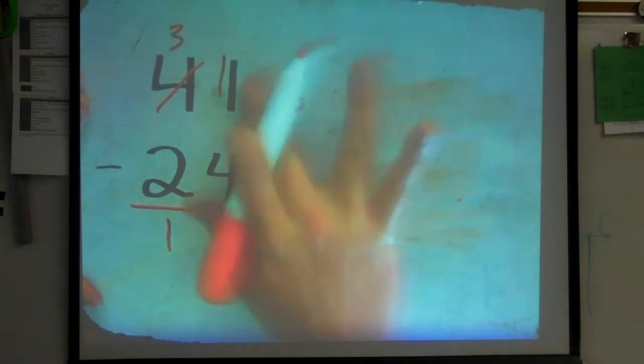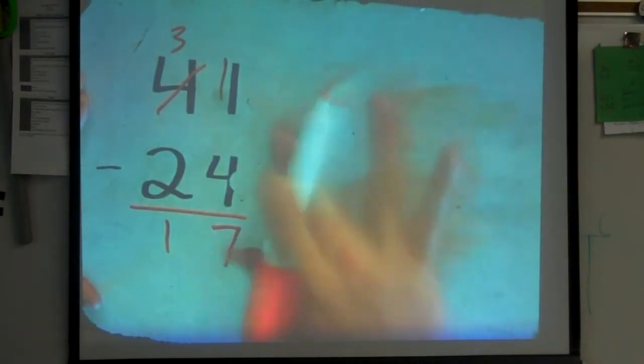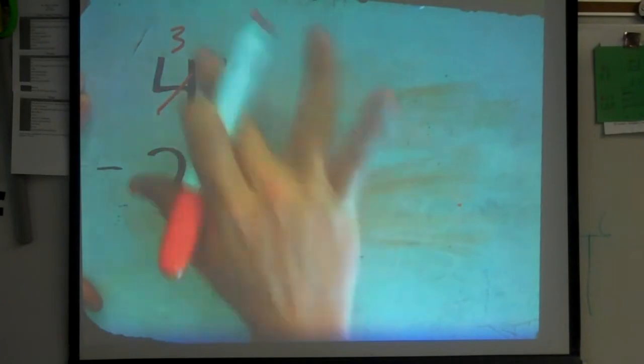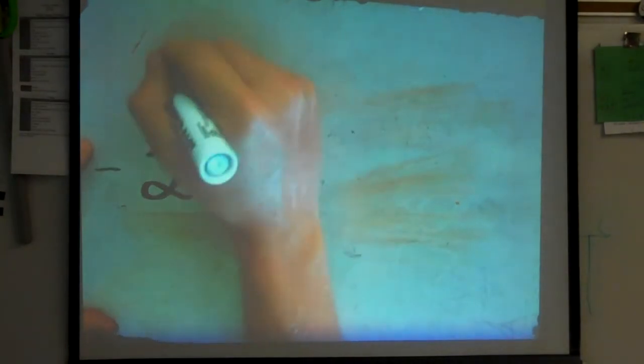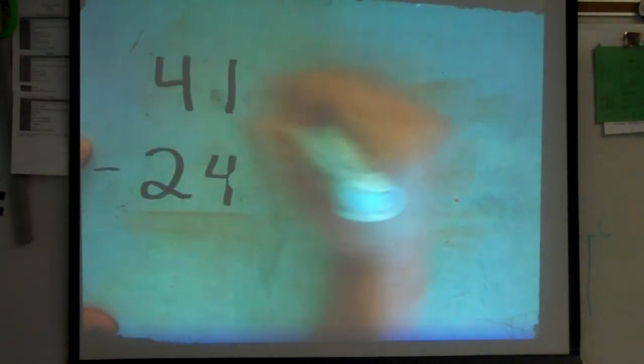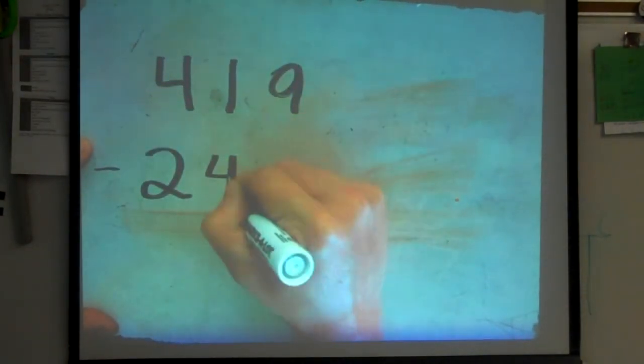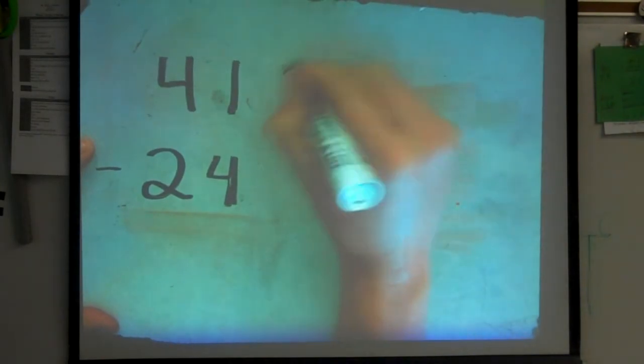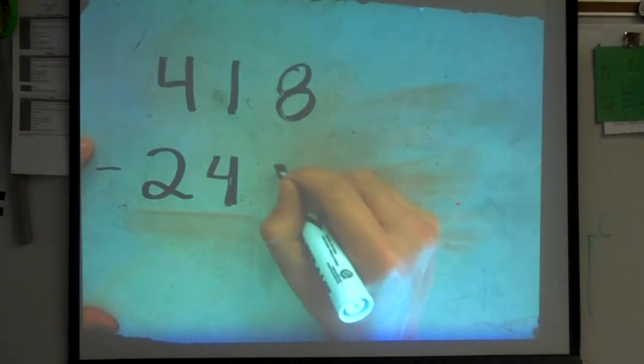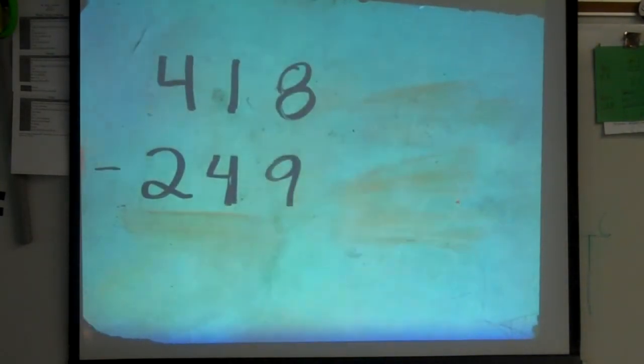But what I want to do really quick is I want to put this into perspective. If we had a number to the hundreds column. So, just for time's sake, I'm going to go ahead and use some of the same numbers. Instead of 41, let's say I've got 418 minus 249.